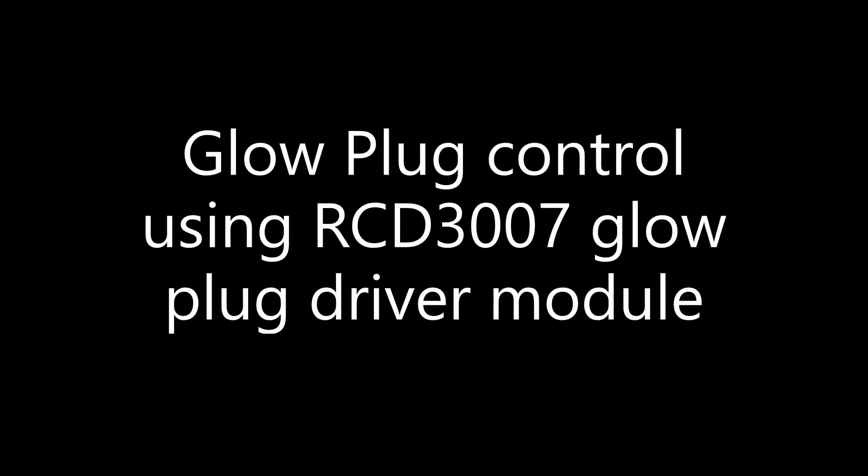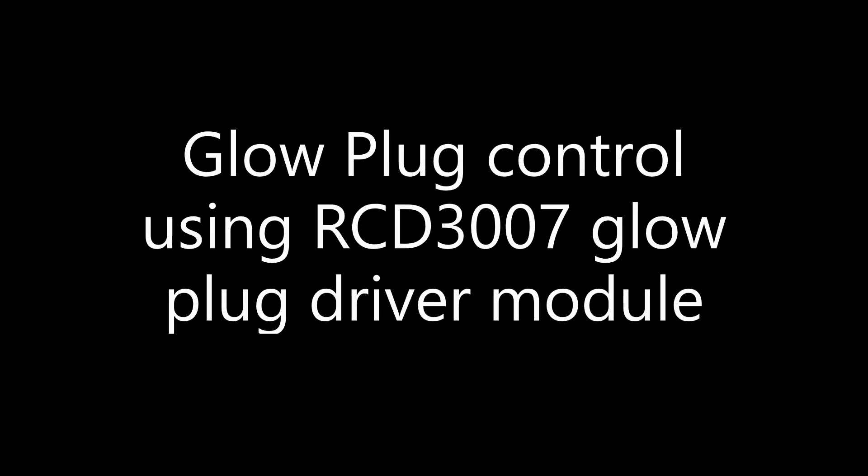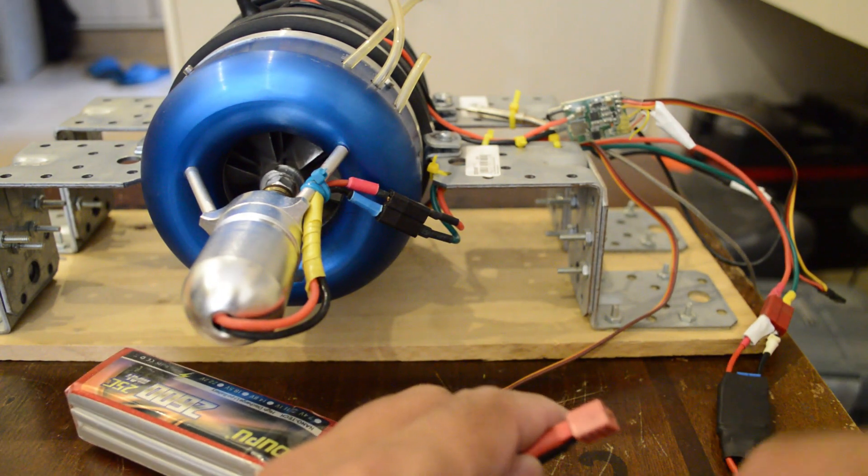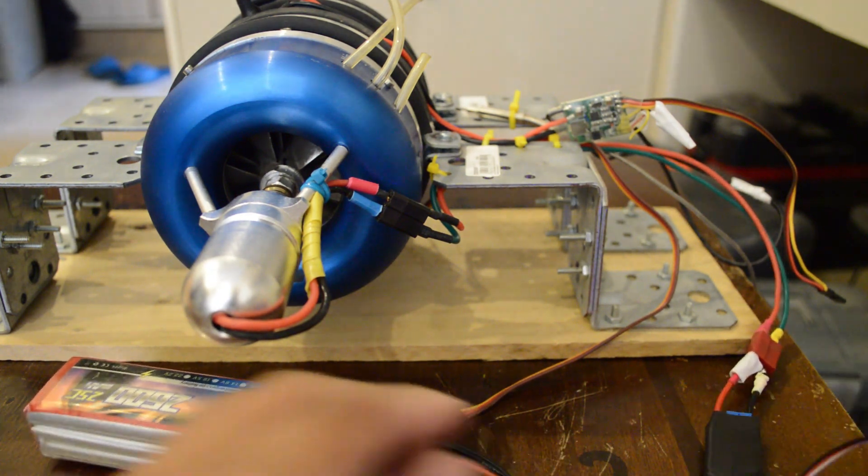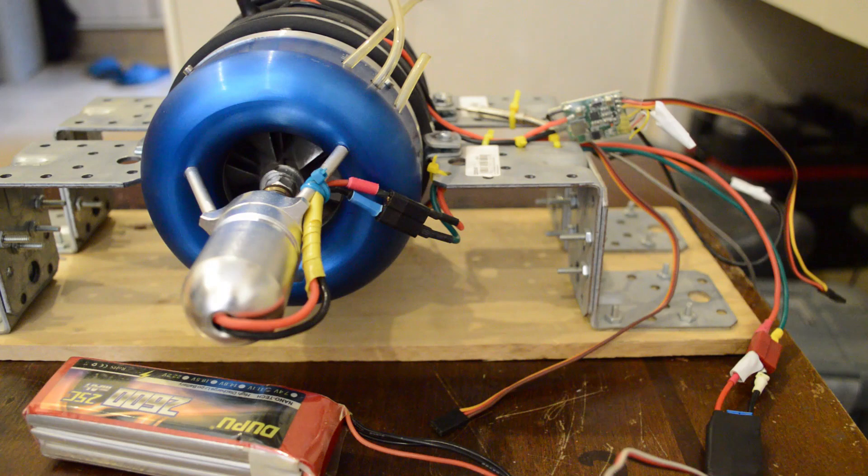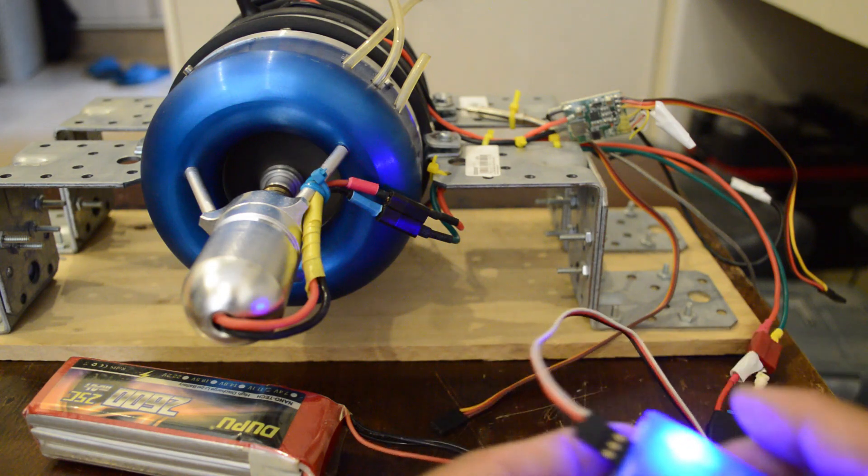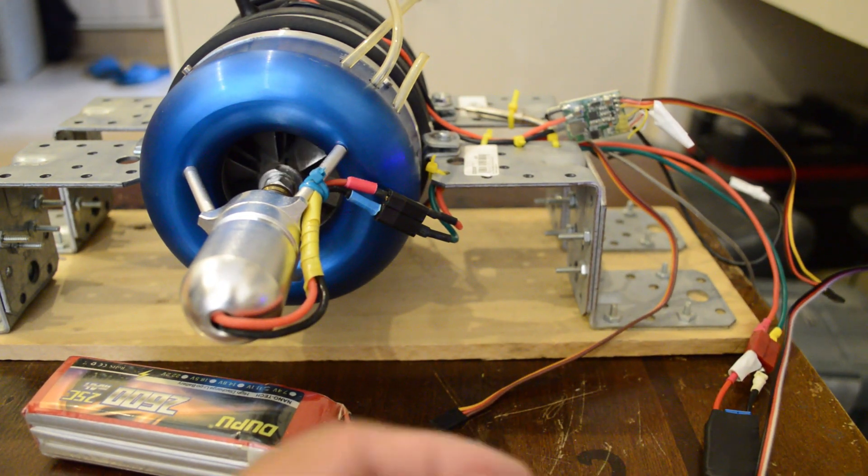The next unit that we are going to test is the glow plug control module using RCD3007. One of the aims of this project is to use off-the-shelf components that can be easily bought from the internet and also to keep the power control components like the ESC for the motors and the glow plug driver module outside the main microcontroller circuit. Connect the battery power. Just making sure that the servo controller is working fine and we are going to use this to control the glow plug as well.